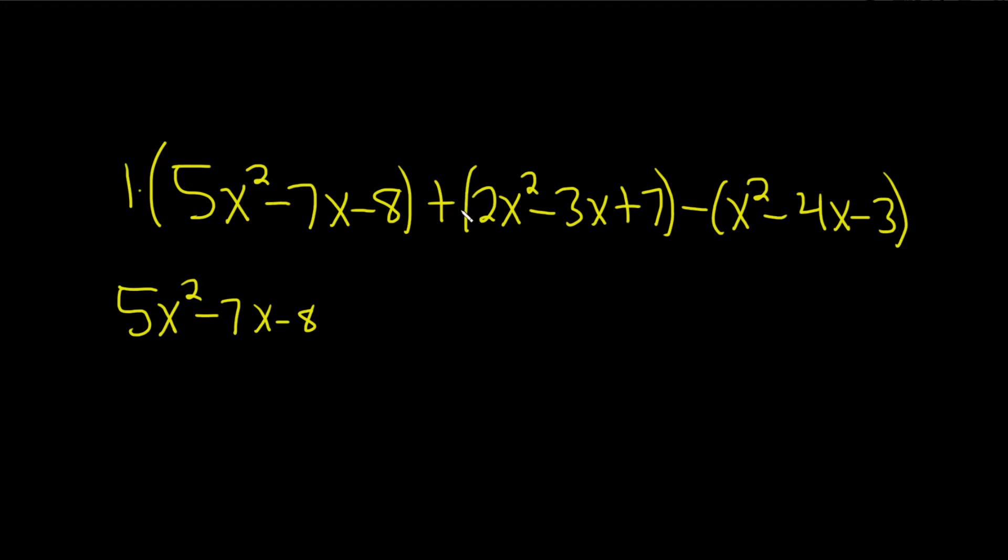Same thing here, there's a 1 but there's no negative so we can just drop it: 2x squared minus 3x plus 7. And then here is where the hard part will be.